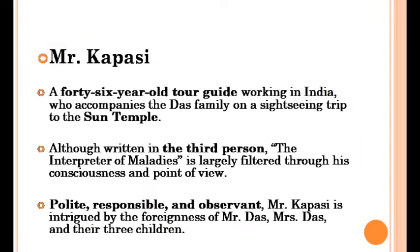There are seven characters in this short fiction. The first character is Mr. Kapasi, a 46-year-old tour guide working in India who accompanies the Das family on a sightseeing trip to the Sun Temple. Although written in the third person, The Interpreter of Maladies is largely filtered through his consciousness and point of view.